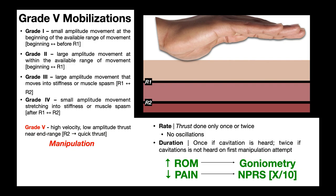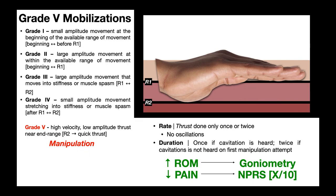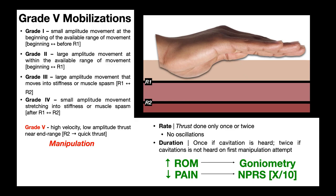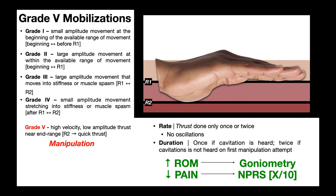Sometimes there's another grade — a grade five mobilization. The grade five mobilization is a high velocity, low amplitude thrust near the end range. The basic idea is you take up all the slack in the tissue, stretch it to about R2, hold there, and then give a quick thrust past R2. This one often needs patient consent — written consent in some states — and requires special training to be able to perform.